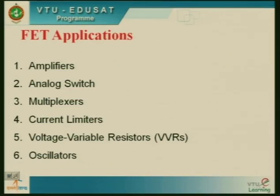At the end of this session, we also touch upon a very interesting circuit or type of architecture wherein we use both NMOS, that is N-type MOSFET, as well as P-type MOSFET in a single circuit — because so far we have been seeing only either N-type or P-type circuits. This is called a CMOS device, where C stands for complementary metal oxide semiconductor. We are listing at least six applications: amplifiers, analog switch, multiplexers, current limiters, voltage variable resistors, and oscillators.